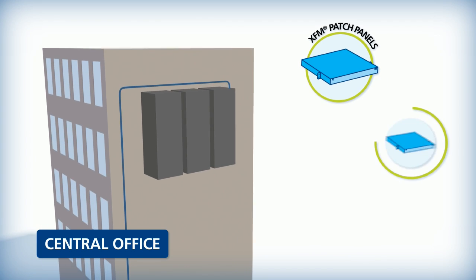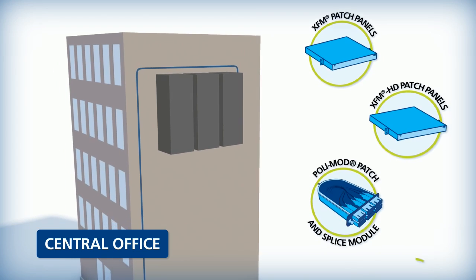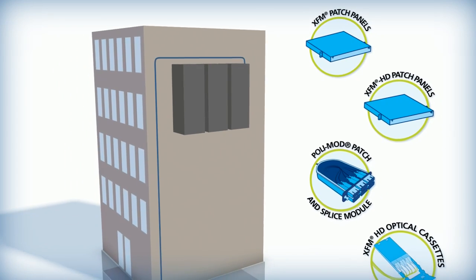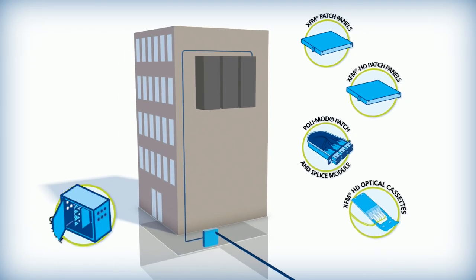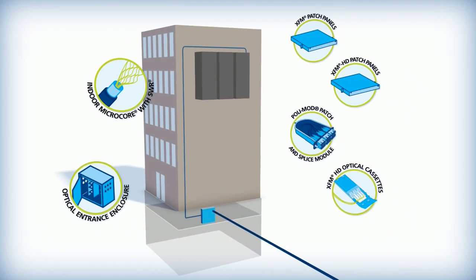For the central office or head-end, AFL manufactures a wide variety of inside plant cable and connectivity products from rack-mount panels and patch and splice modules to optical entrance enclosures and indoor cable.